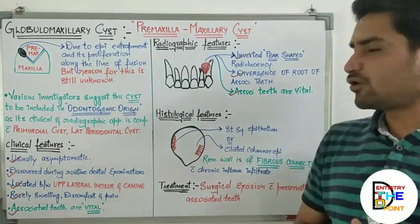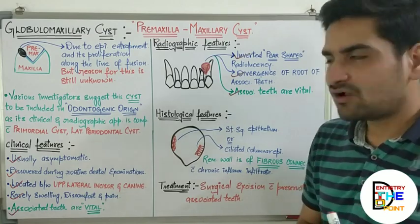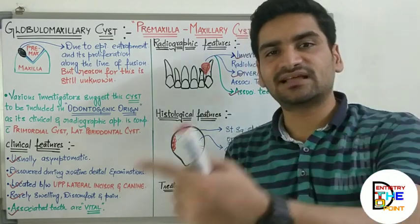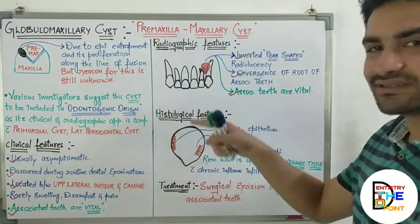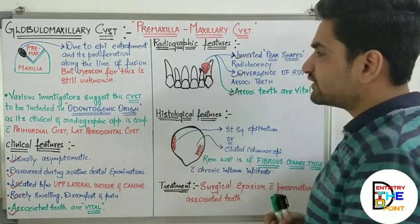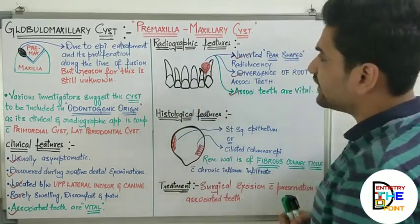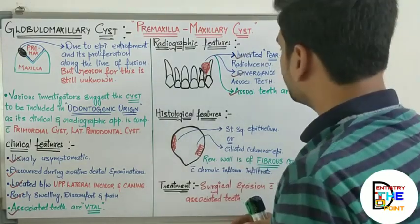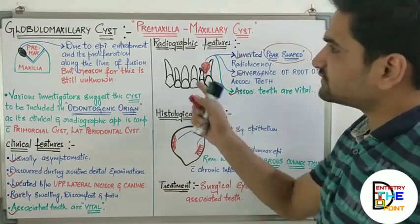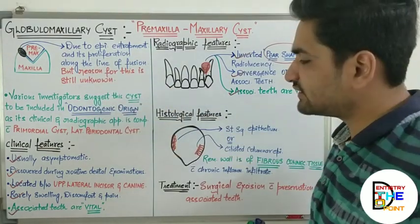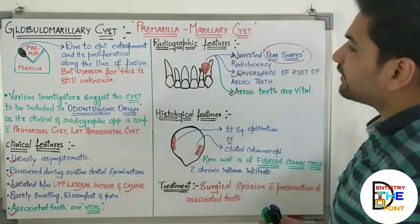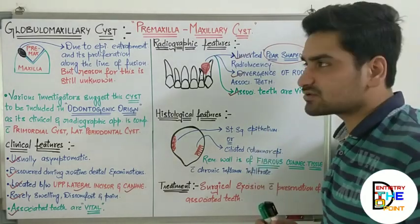You can also confuse it with a radicular cyst, but in a radicular cyst the teeth get infected first and then leads to cyst formation. In globulomaxillary cysts, the teeth are not infected — they are vital in most cases — so you need to make the appropriate diagnosis. The key things to remember are the inverted pear-shaped radiolucency and the location between the upper lateral incisor and canine.